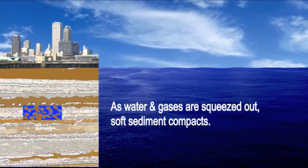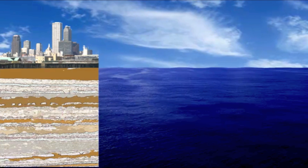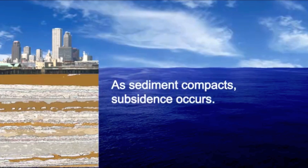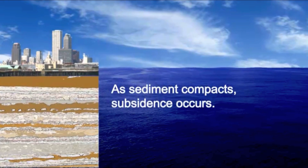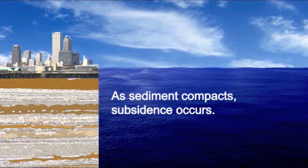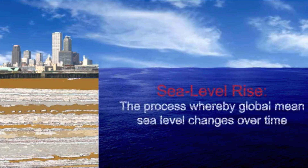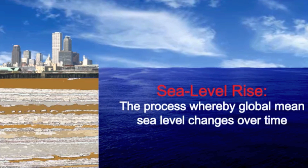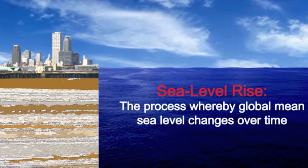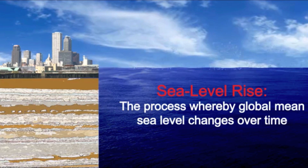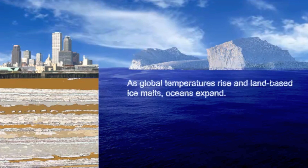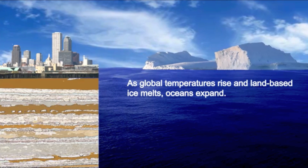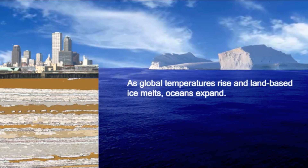As the sediment compacts, subsidence occurs and the land gradually sinks. Buildings and other structures also sink along with the soil surface. The other process contributing to land loss is sea level rise — as global temperatures rise and land-based ice melts, oceans expand.